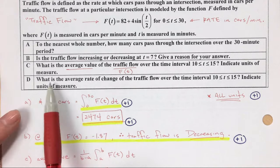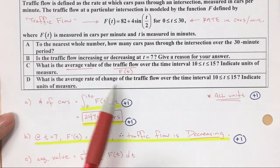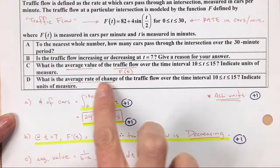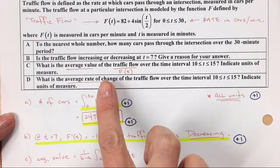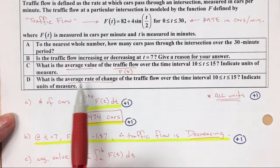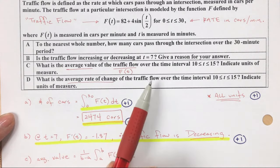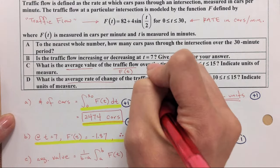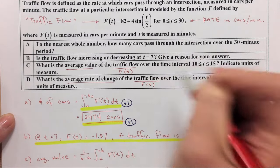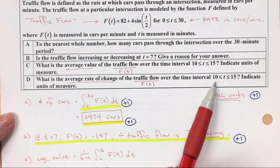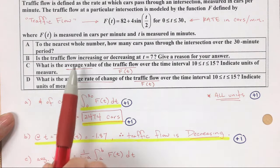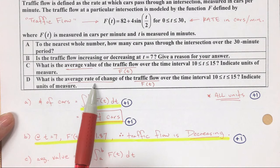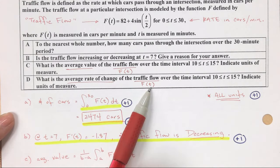The last part of the question, D. What is the average rate of change? Okay, that's different. The average rate of change is some sort of slope. So the average rate of change of the traffic flow. This means slope of F of T over the time interval 10 to 15. So average value of F of T versus average rate of change, which is slope of F of T.